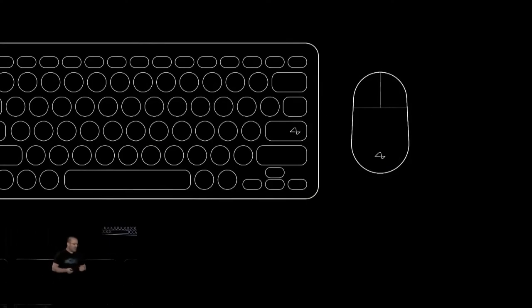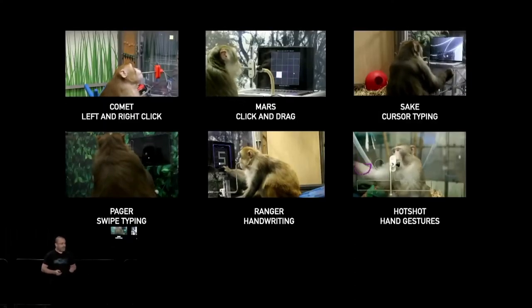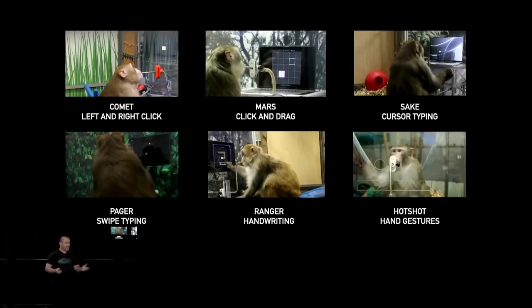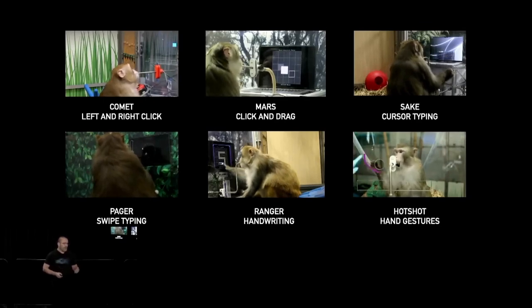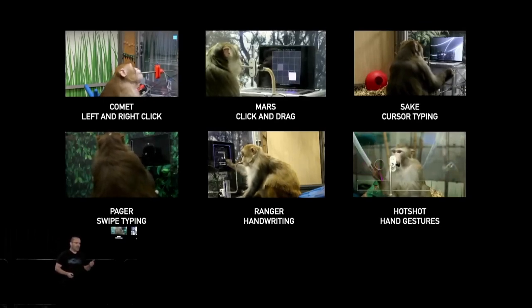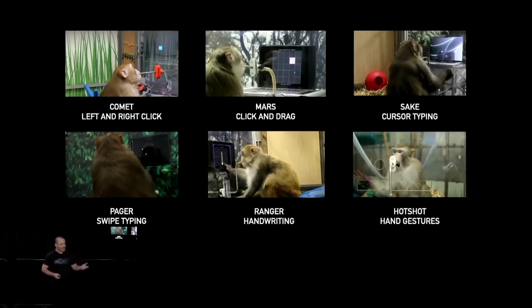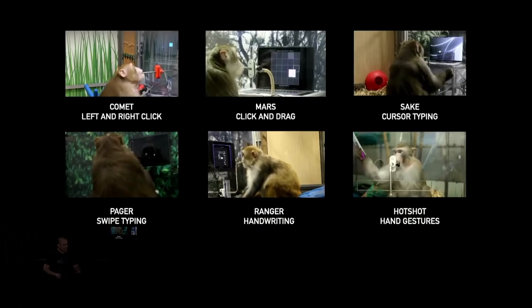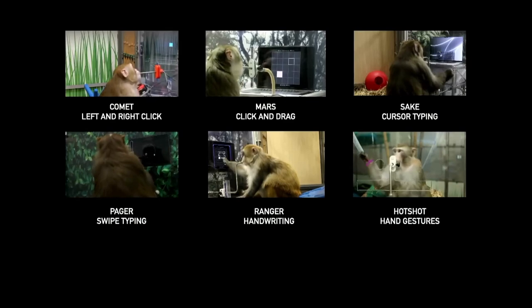So we are designing mouse and keyboard interfaces for the brain. The way we do that is by training Pedro and his friends on a variety of computer tasks and then designing algorithms to predict their behavior. Here you can see a few examples of tasks in different phases of monkey training. For example, left and right click, click and drag, cursor typing, swipe typing, handwriting, and even hand gestures.